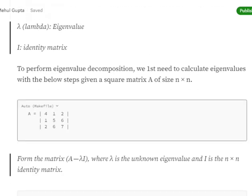Assume that we are taking this particular matrix for starting: A equals [[4, 1, 2], [1, 5, 6], [2, 6, 7]].